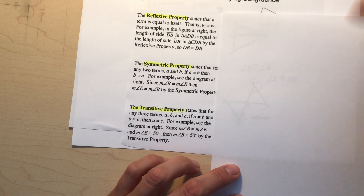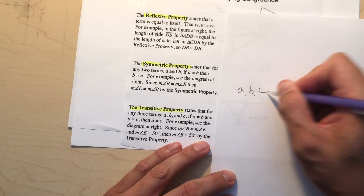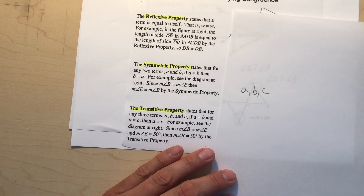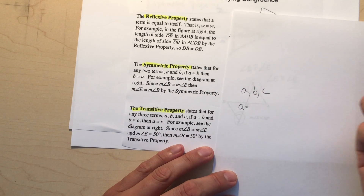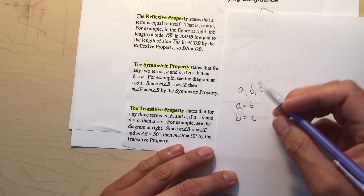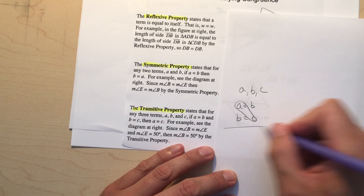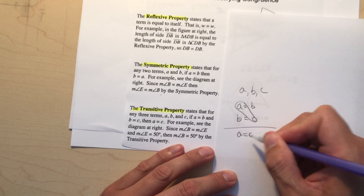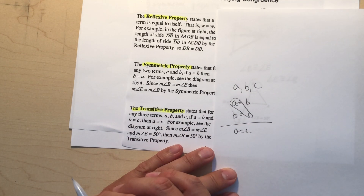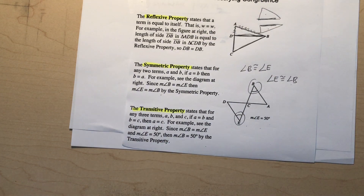The Transitive Property: if A equals B and B equals C, then A must also equal C. It's like substitution. For example, with three angles or sides — if the first equals the second and the second equals the third, then the first equals the third. That's the transitive property.